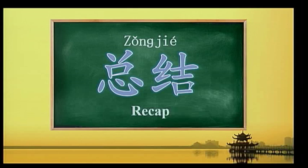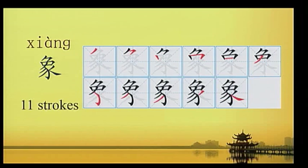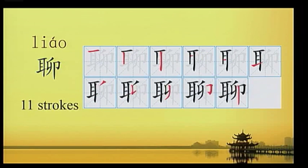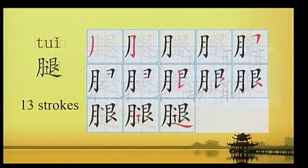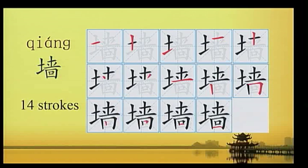总结。摸，摸一共有十三个笔画。像，相一共有十一个笔画。腿一共有十三个笔画。墙一共有十四个笔画。